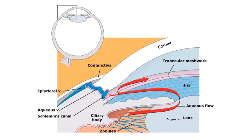Before we discuss glaucoma further, it's necessary to first understand the normal pathway of aqueous humor drainage in the eye. Aqueous humor is produced by the ciliary body in the posterior chamber at a rate of 2 to 3 microliters per minute. After filling the posterior chamber, aqueous moves forward around the lens and through the pupil to fill the anterior chamber. At the angle formed by the iris and cornea, aqueous drains through the trabecular meshwork into the canal of Schlem.